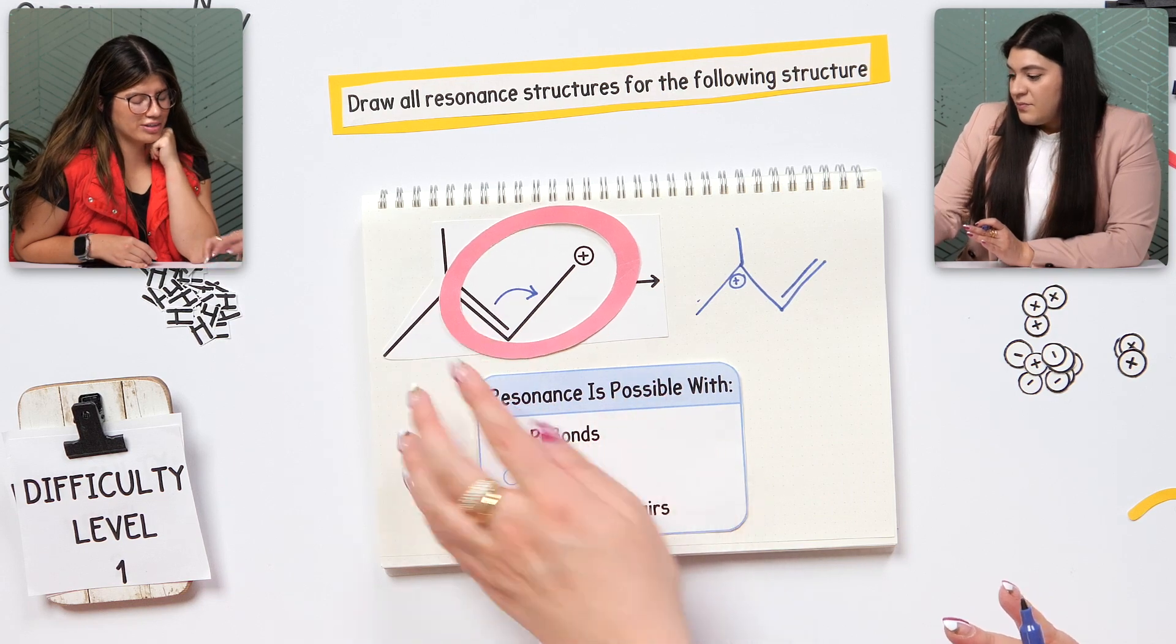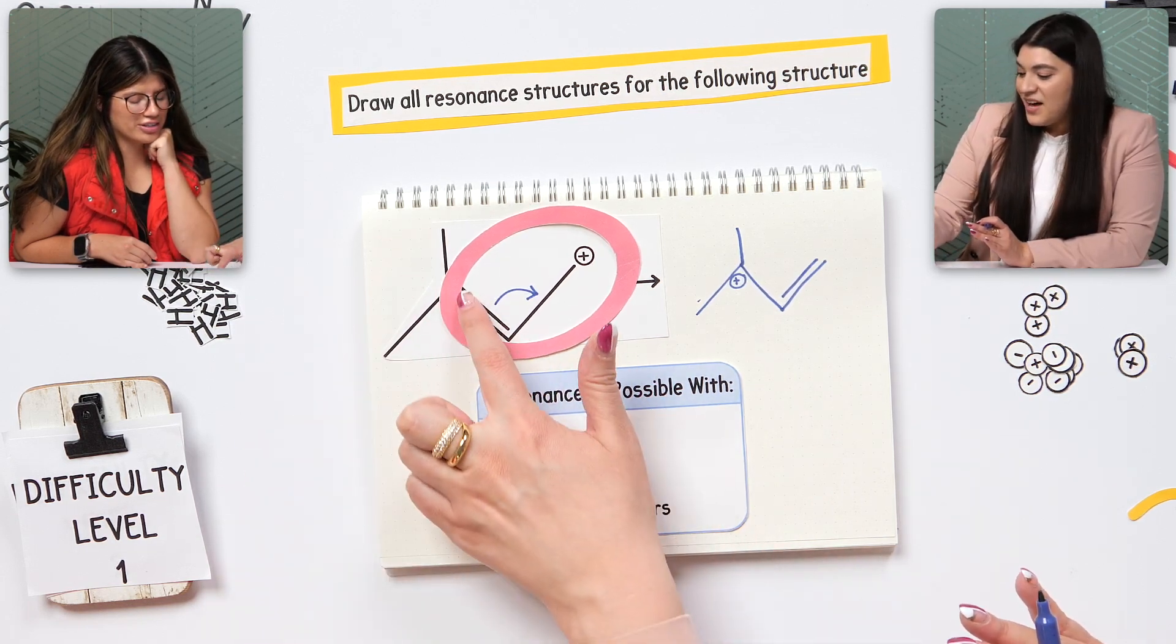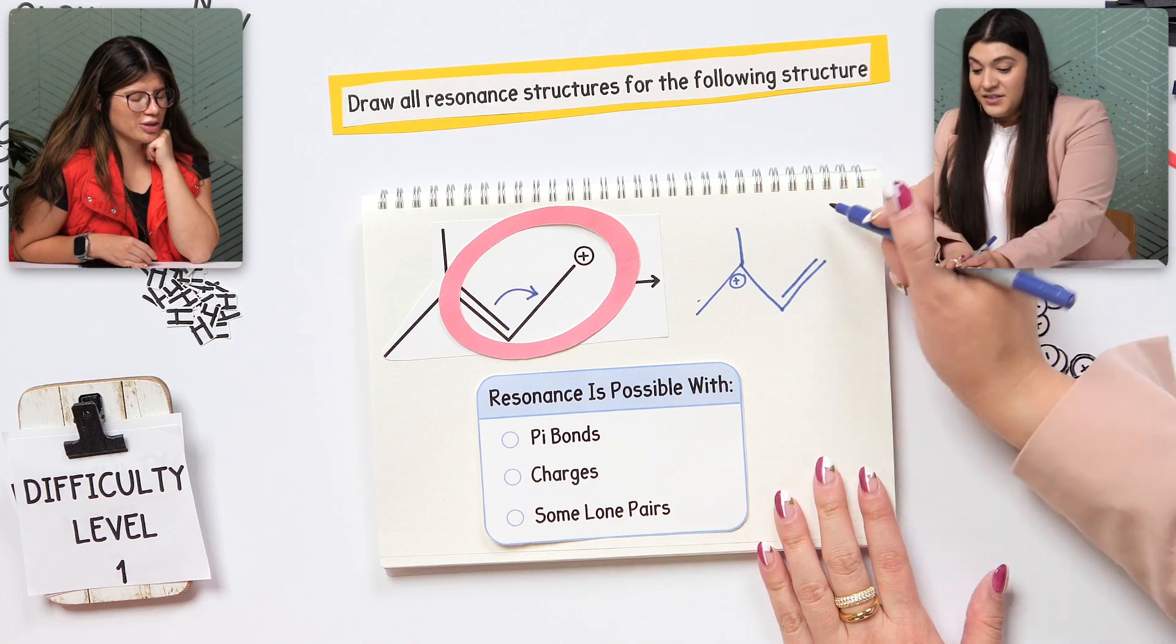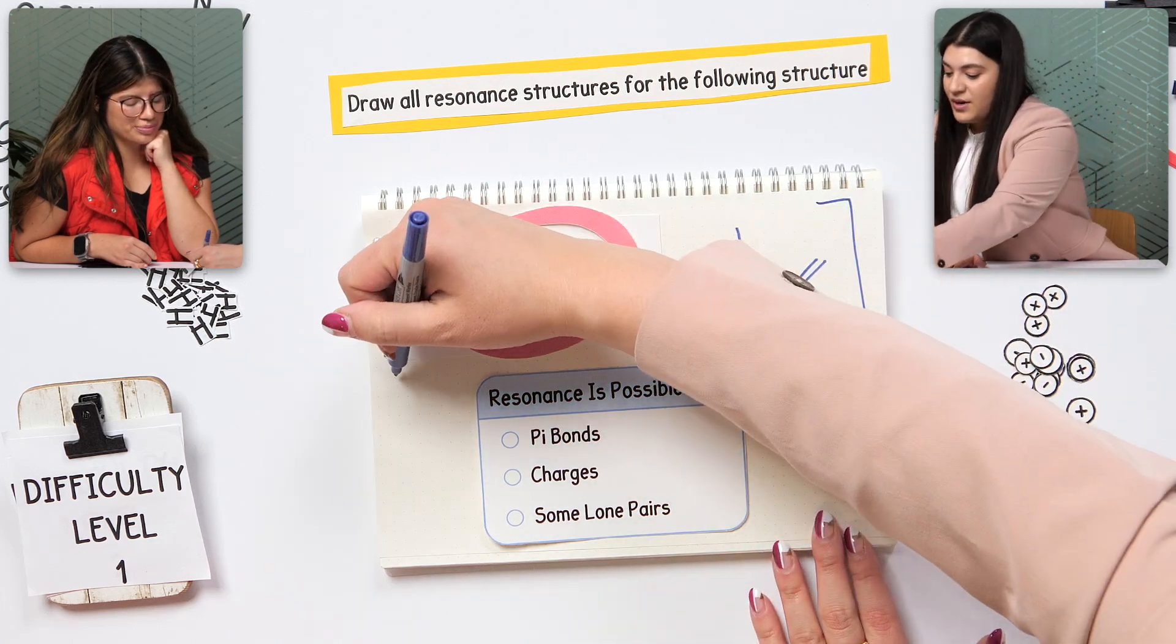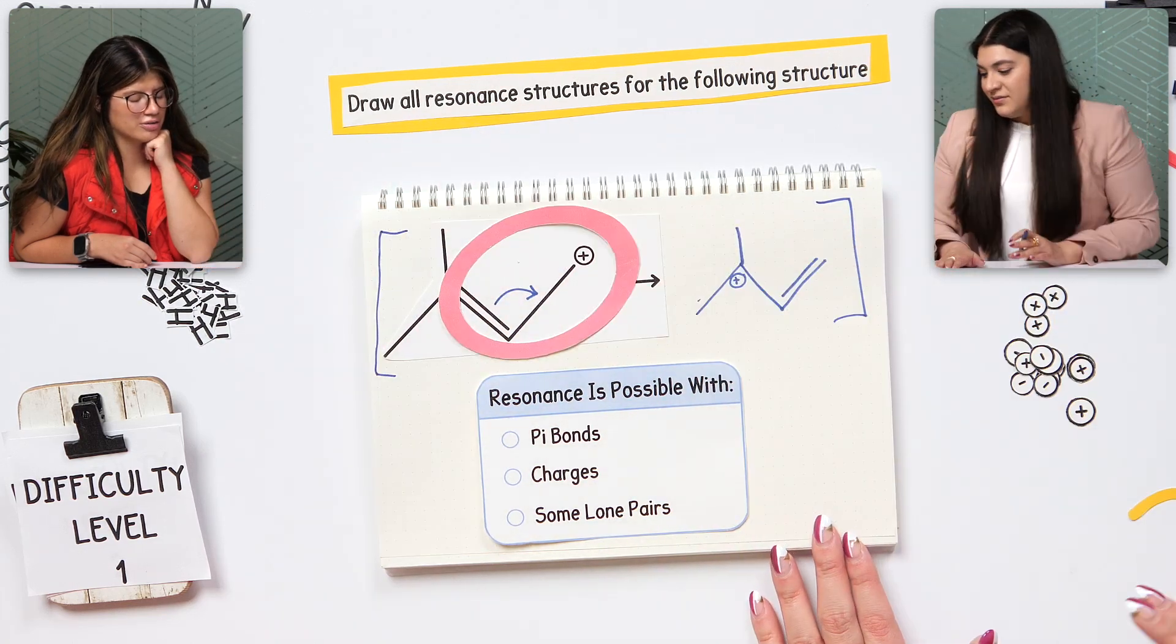But it's not going to happen here. Not there. So that's why we're only moving throughout this direction. Oh, okay. So yes, there's only two resonance structures possible. That makes sense.